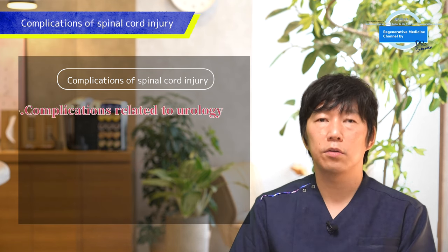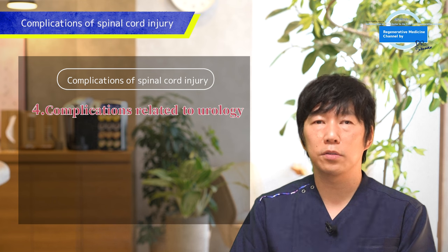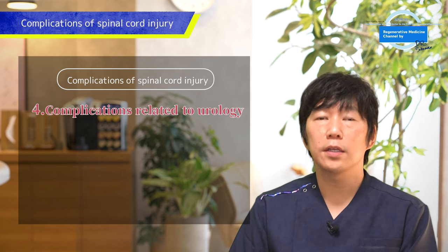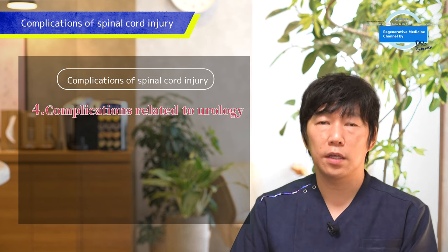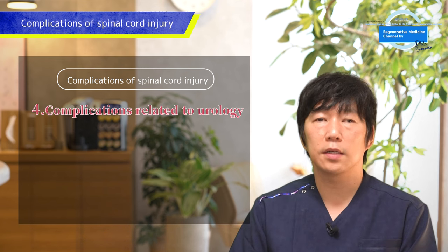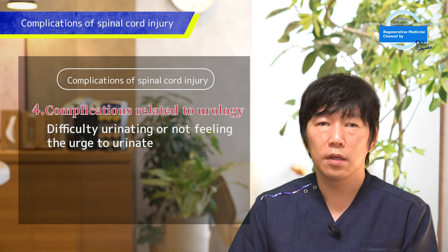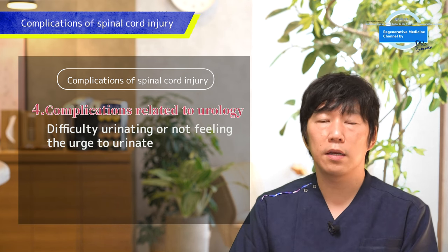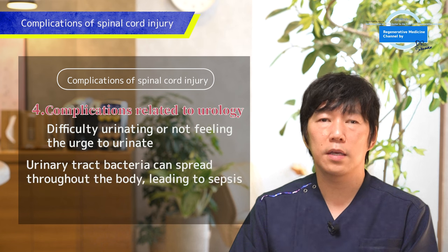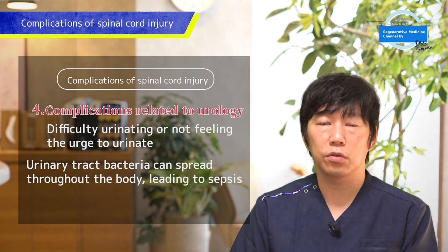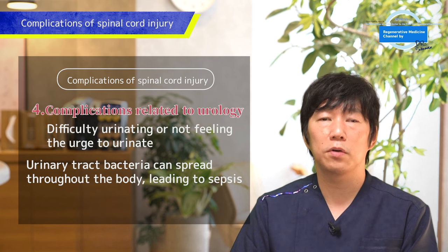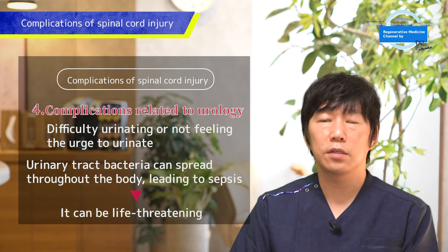The fourth complication is urological problems. When a spinal cord injury occurs, urinary issues such as not being able to urinate or not feeling the urge to urinate can develop. Sometimes harmful bacteria can enter the urine, spreading throughout the body and leading to a serious condition called sepsis, which often leads to loss of life.